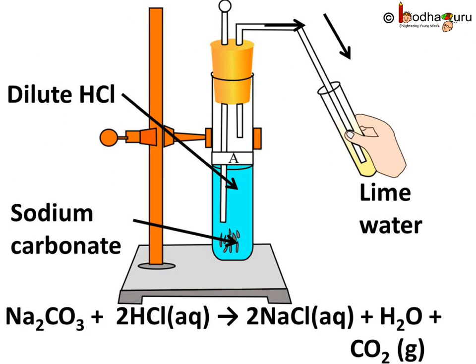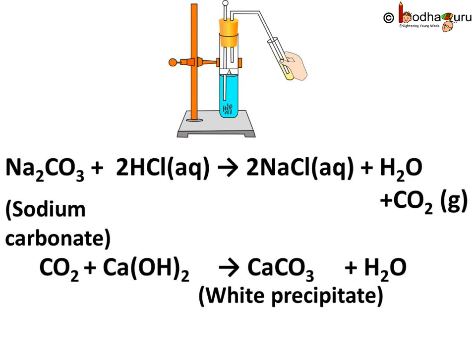Now let's do an interesting experiment. We take very little sodium carbonate and sodium hydrogen carbonate in two test tubes. Now we add a little diluted hydrochloric acid in them. We pass the gas produced in each case through lime water, i.e. calcium hydroxide solution. We will get a white precipitate of calcium carbonate. This means the gas produced is carbon dioxide.